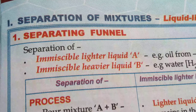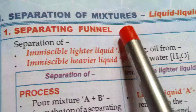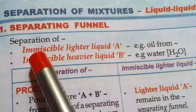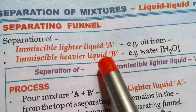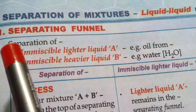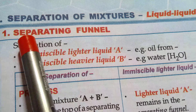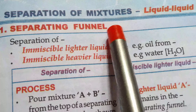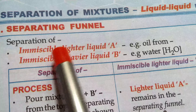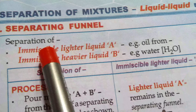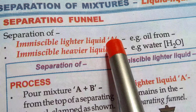Next, the separating funnel. Separating funnel is used for separating any immiscible lighter liquid from an immiscible heavier liquid. This point is very important: a separating funnel is used to separate the immiscible lighter liquid. Immiscible means the liquids are not miscible together, like oil and water.